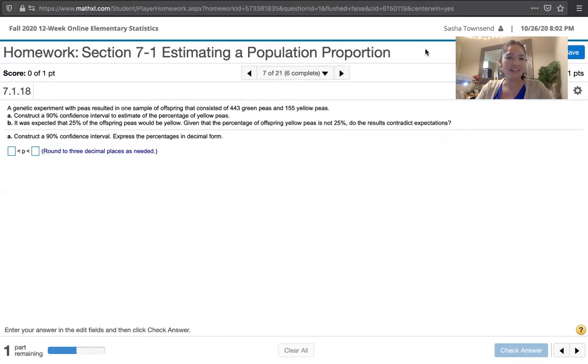Part A asks us to construct a 90% confidence interval to estimate the percentage of yellow peas. And then in Part B, we're asked the following: it was expected that 25% of the offspring would be yellow. Given that the percentage of offspring yellow peas is not 25%, do the results contradict expectations?